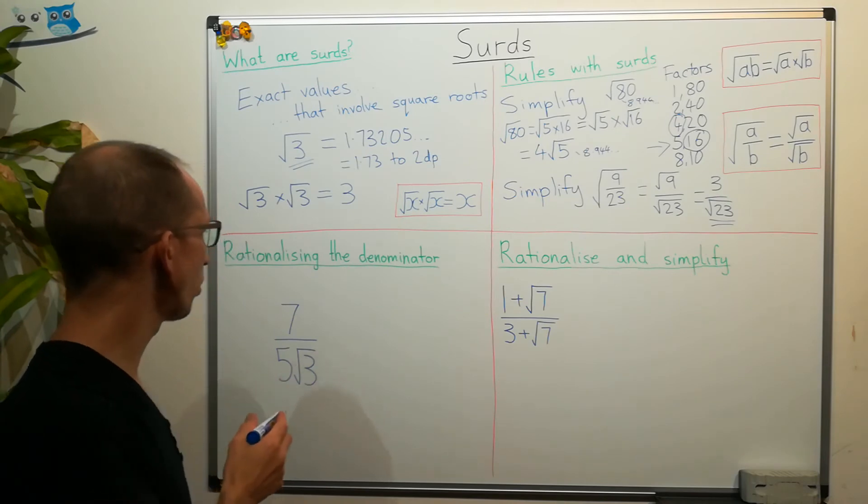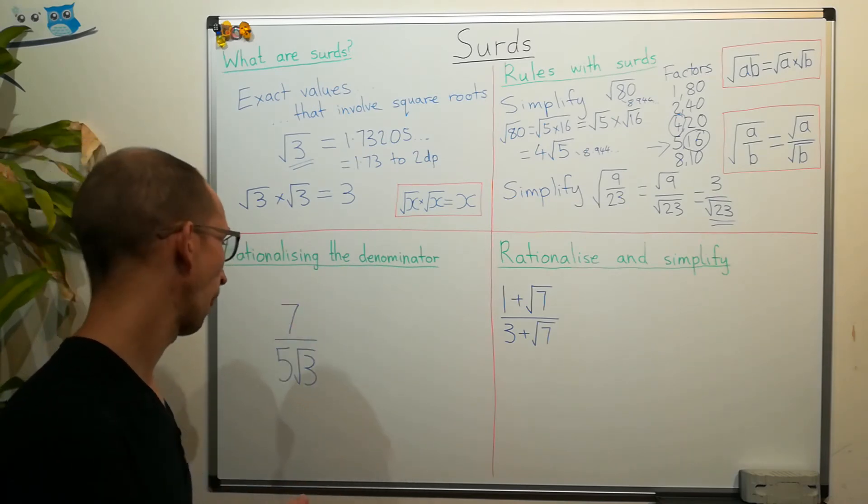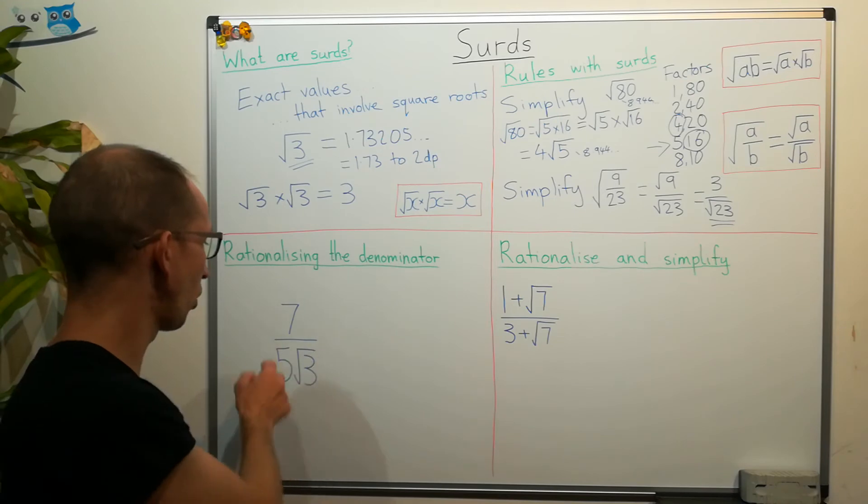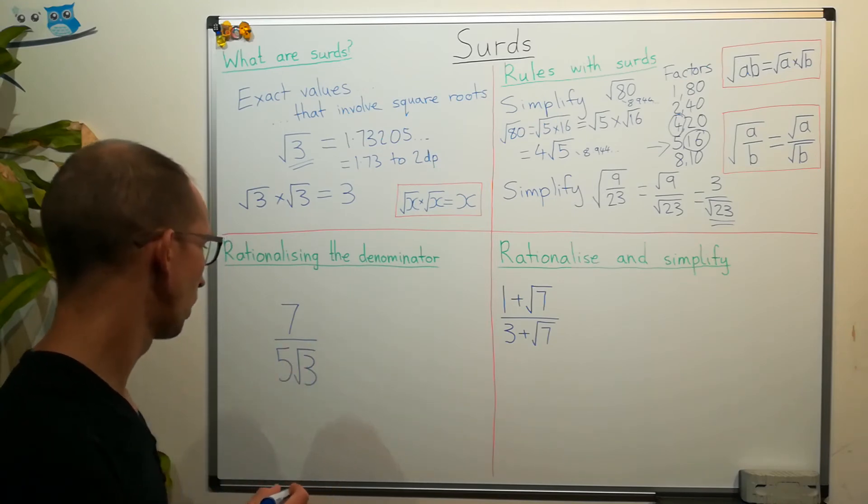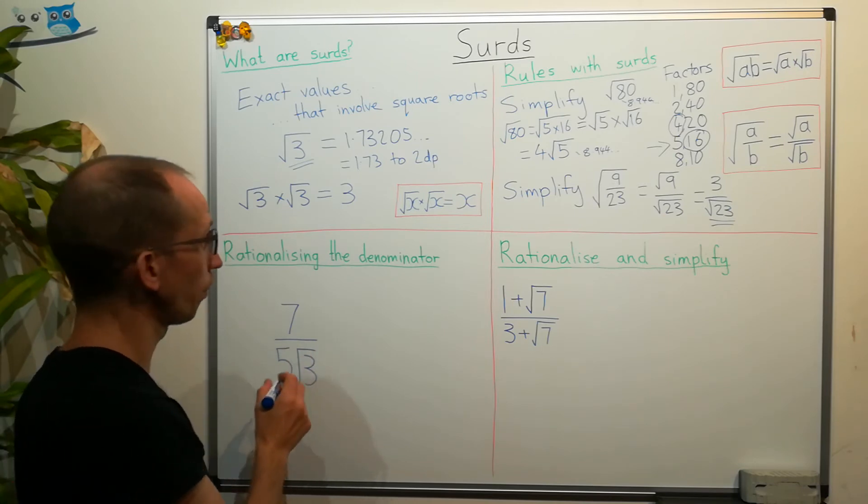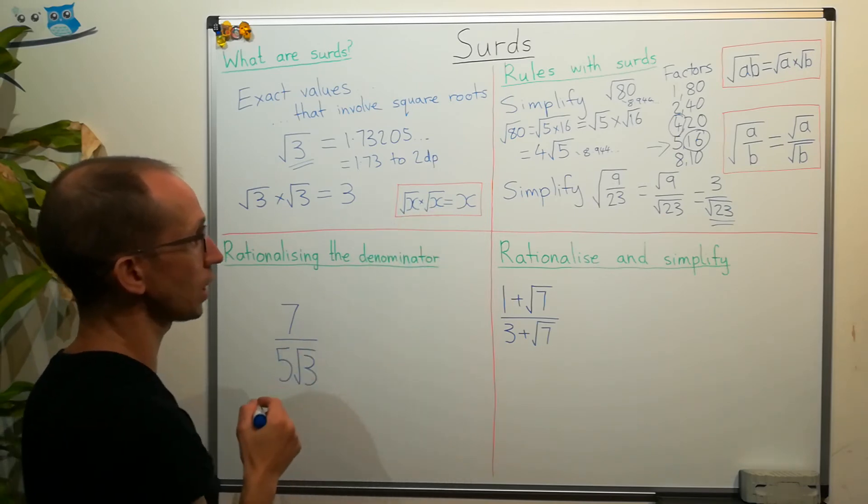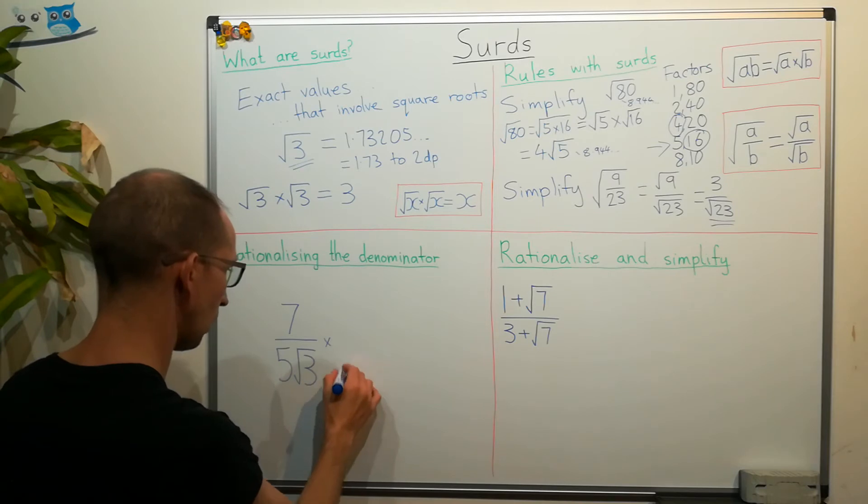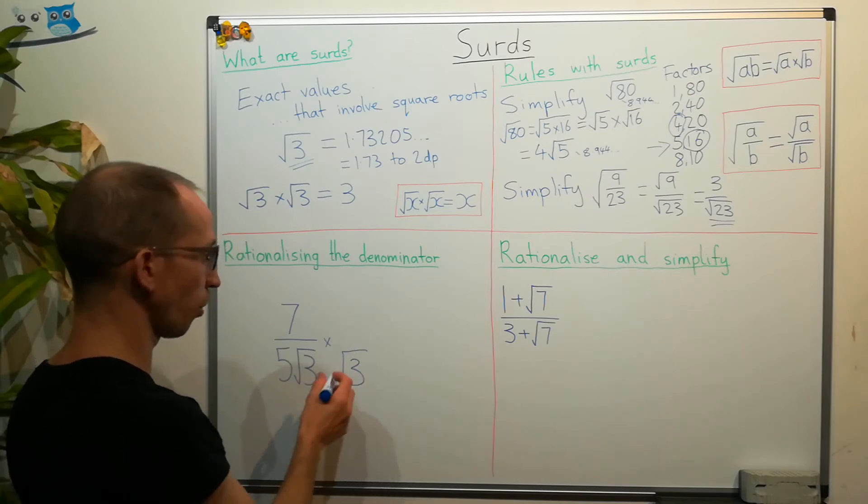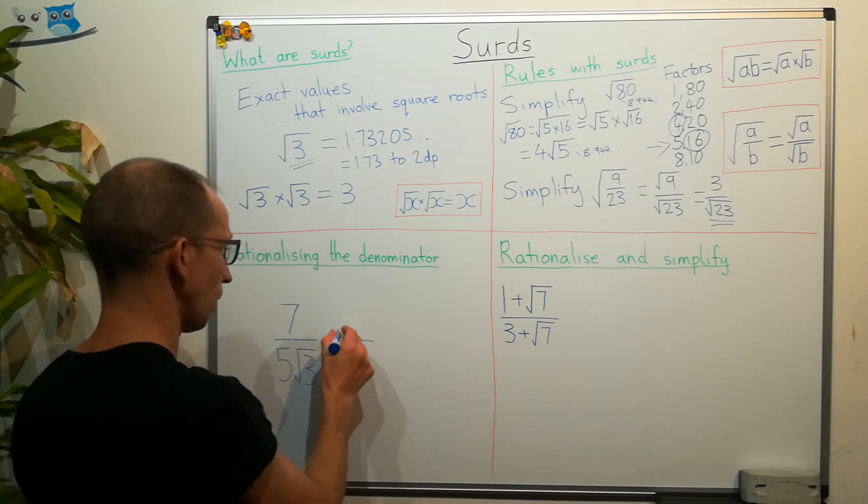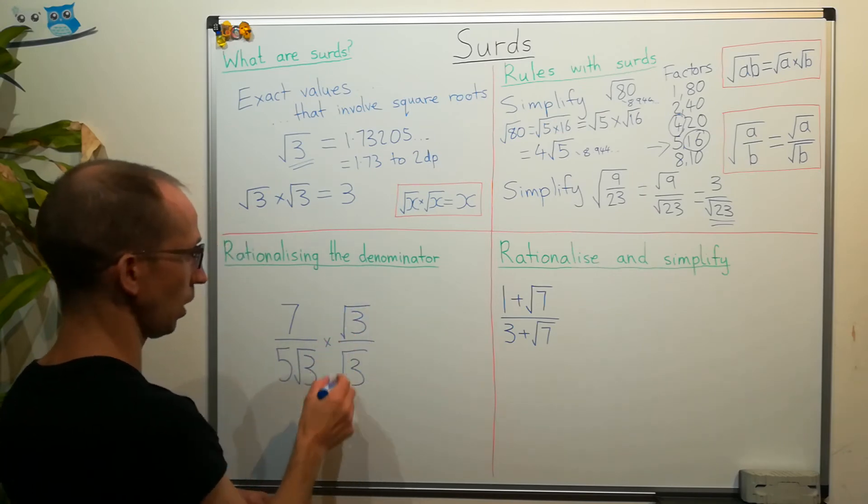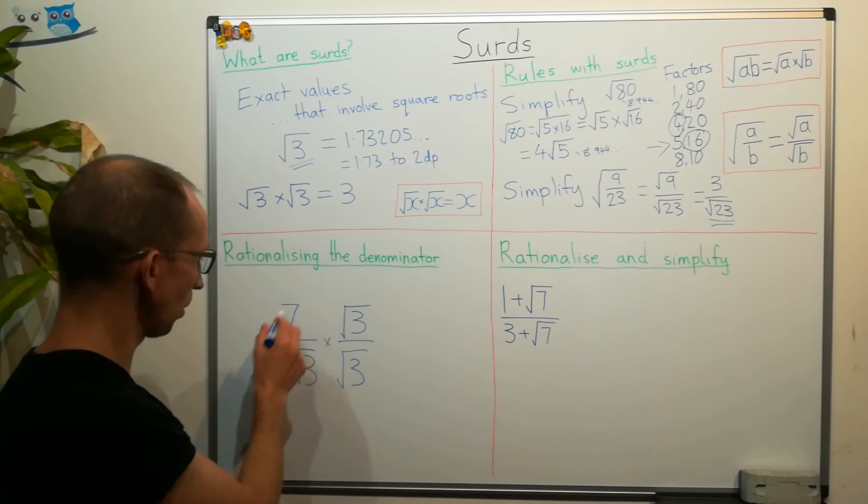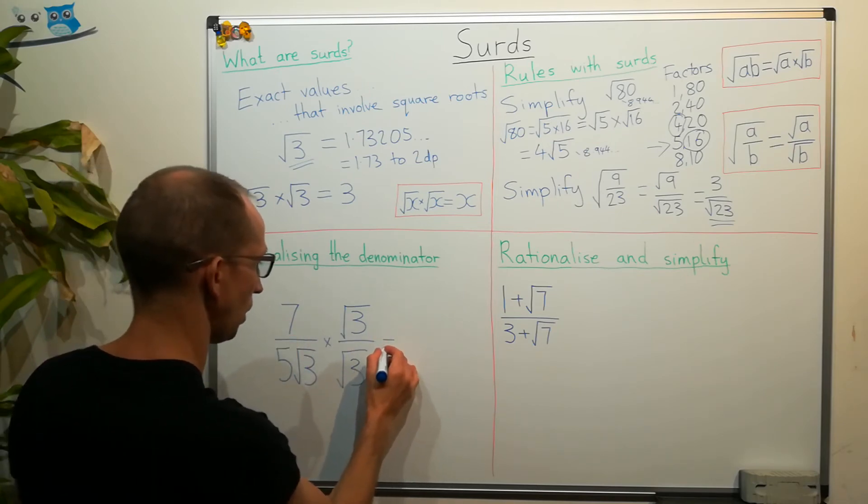When dealing with surds, you might also see the term rationalizing the denominator. What that basically means is getting rid of any square root in the bottom half of your fraction or your division. And the best way to do that is by multiplying it. Because we've seen already, if we multiply the same square root together, we just get the number itself. So, if we multiply it by root 3, it's going to go, but we can't just multiply by some random number. However, if we write it like this, square root of 3 divided by square root of 3, well, this is just 1. So, we multiply this fraction by 1.